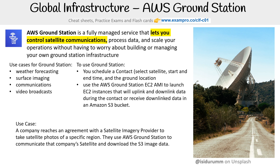A use case could be something like: you are a company that has reached an agreement with a satellite image provider to use their satellites to take photos for a specific region or time. The idea is that you are using AWS Ground Station to communicate with that company's satellite and download that image data to your S3 bucket.